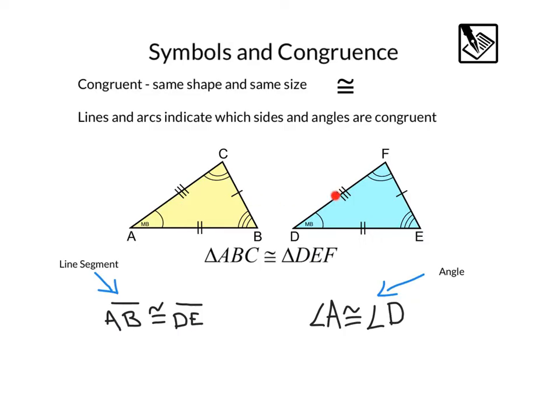We have these two congruent triangles down here, and these lines on the sides and arcs on the angles tell us which sides and angles are congruent. This is a congruent statement for the whole triangles. Triangle ABC is congruent to triangle DEF. You can see A and D have the same arcs. Side AB has two tick marks, and side DE has two tick marks. As long as these pieces match up and are congruent, the whole shape is also congruent.